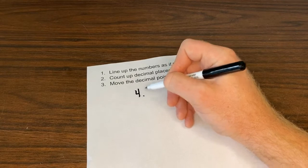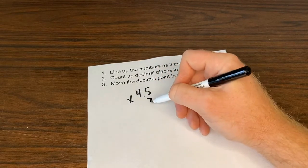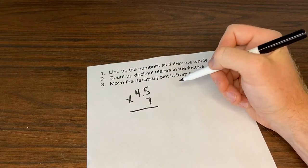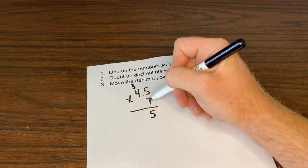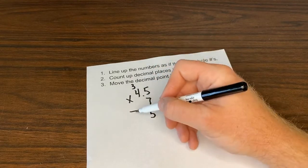Here we go. We have 4 and 5 tenths times 7 lined up as whole numbers. 7 times 5 is 35. Drop my 5, carry the 3. 7 times 4 is 28, plus 3 more is 31.